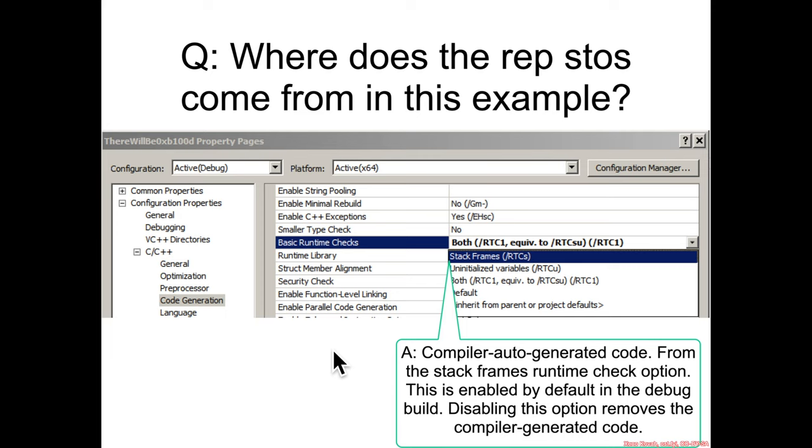And then checking at the end, did somebody corrupt my C's? Because if they did, then that means they have a stack buffer overflow. Now this is not actually a security check and you would not generally expect to see this in production code. This is more just to help programmers know when they've screwed up and they're going to break something.